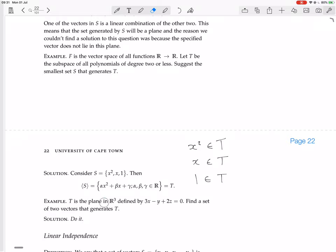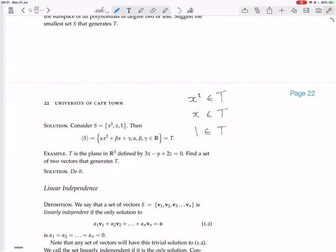Next example. T is a plane in R³ defined by 3x − y + 2z = 0. Find a set of two vectors that generates T. So try and do this for yourself first. And I'm going to try and do it as well. So we want... What we need is two vectors in the plane. That's all we need. Two vectors in the plane, but we mustn't have one vector as a linear combination of the other vector.